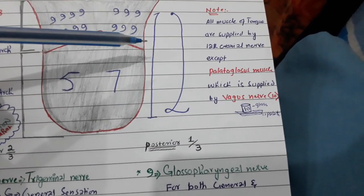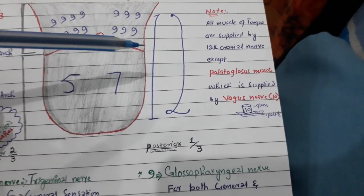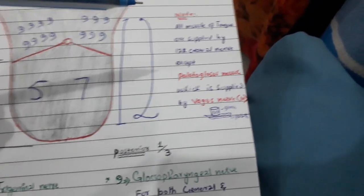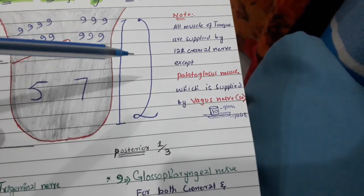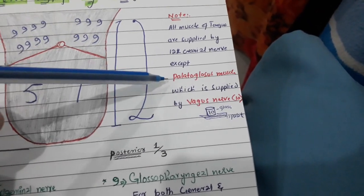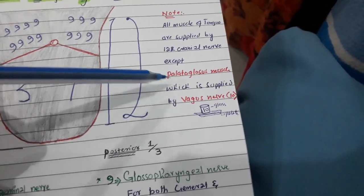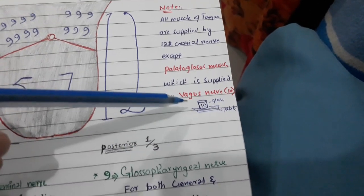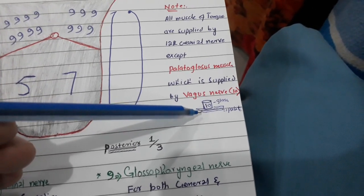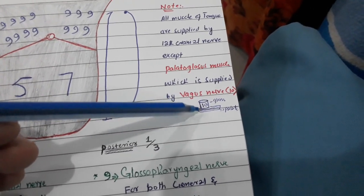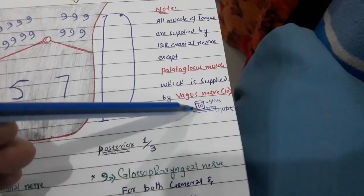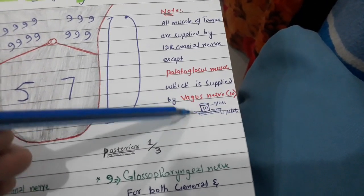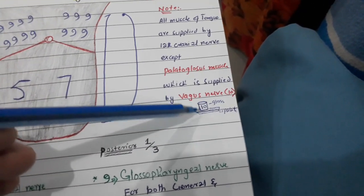All muscles of the tongue — both intrinsic and extrinsic — are supplied by the 12th cranial nerve, which is the hypoglossal nerve, except the palatoglossus muscle, which is supplied by the vagus nerve. To remember this, use the mnemonic 'tin plate and glass': palatoglossus is the only muscle of the tongue supplied by the vagus nerve.